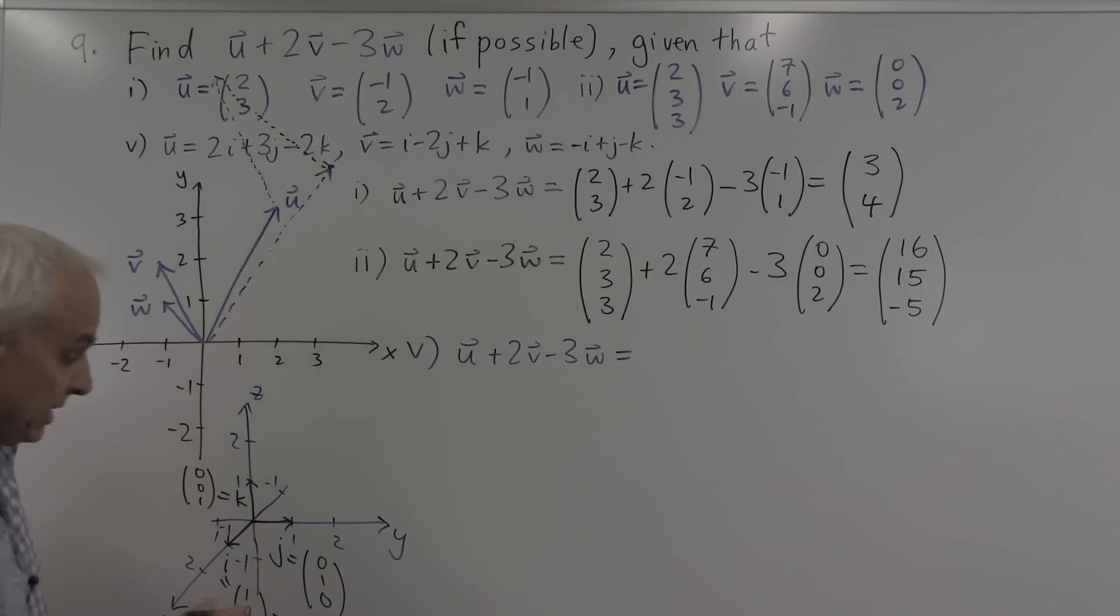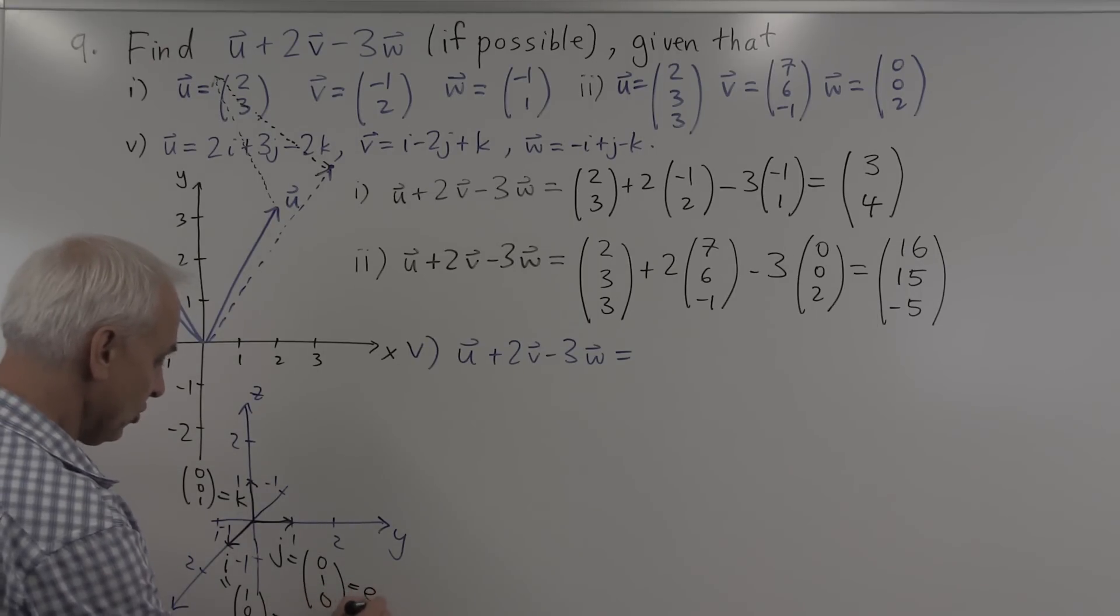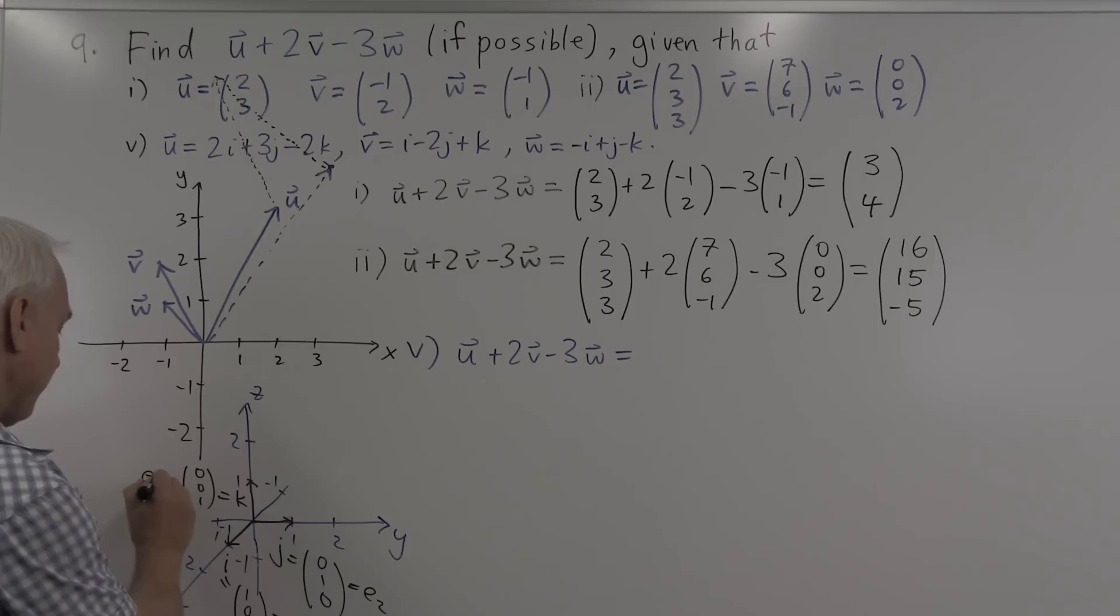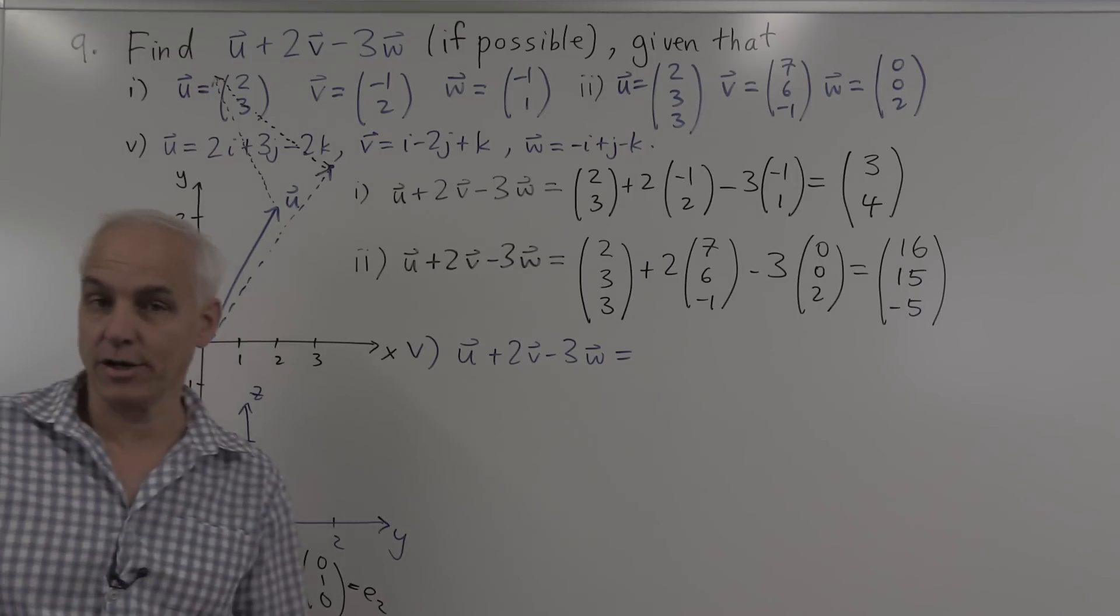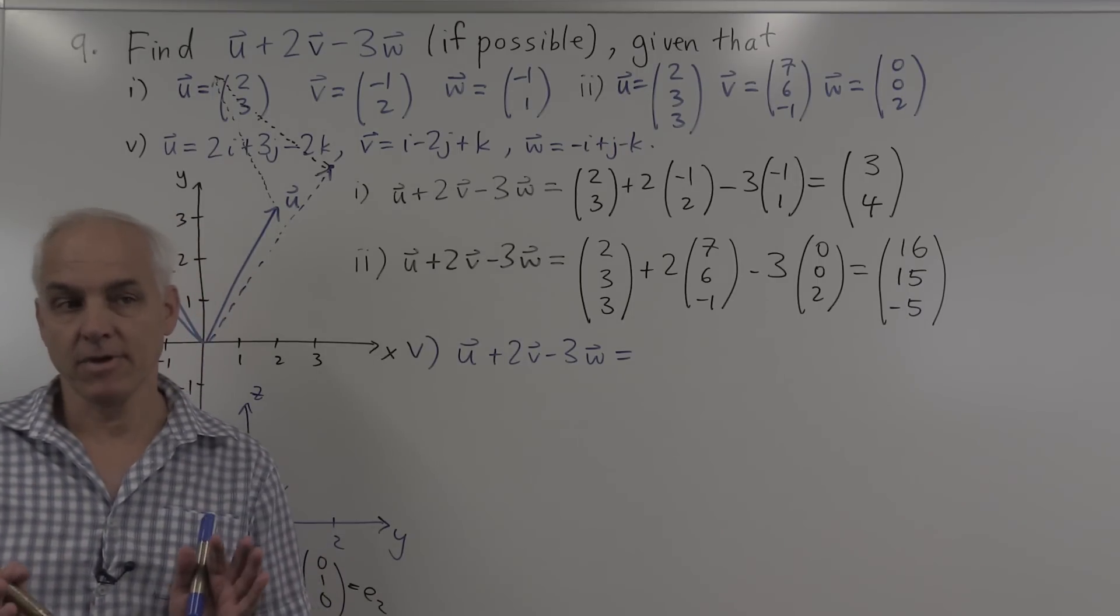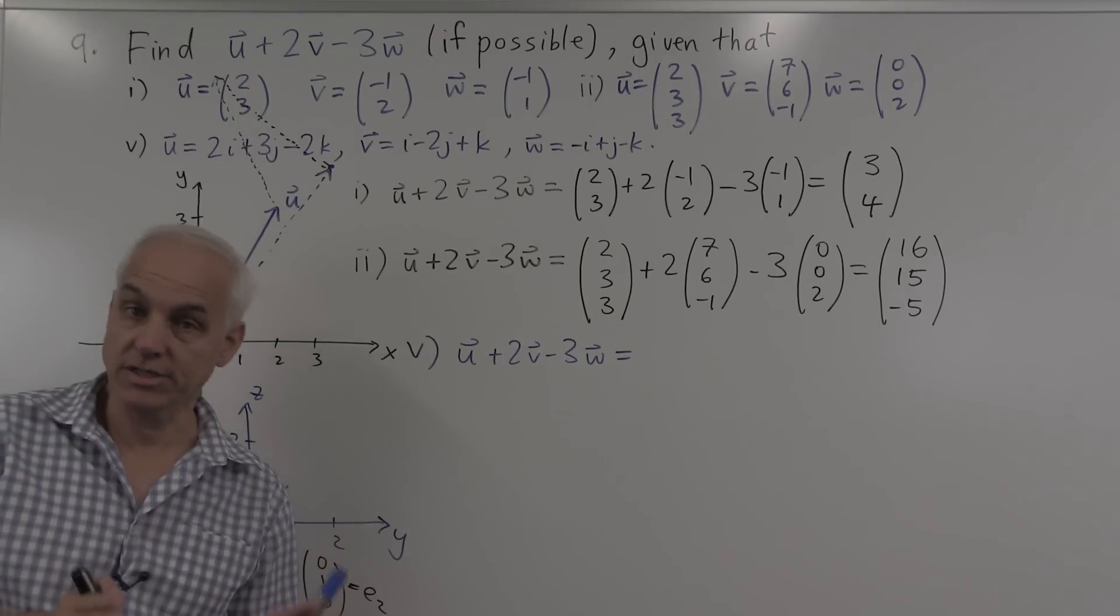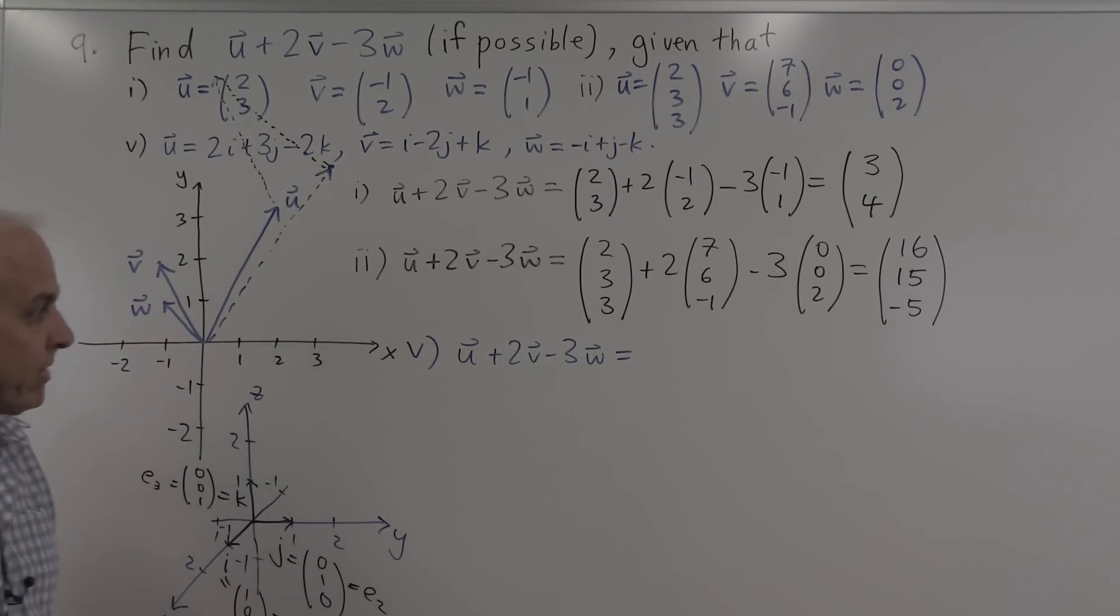And I maybe should mention that later on in the course, sometimes there's an alternate notation. Sometimes we refer to that as e1 and e2 and e3 in terms of standard basis vectors. The i, j, and k notation is particularly used by engineers and physicists.